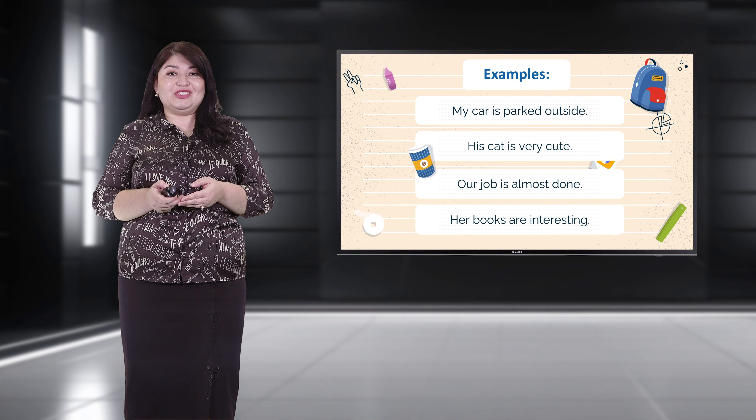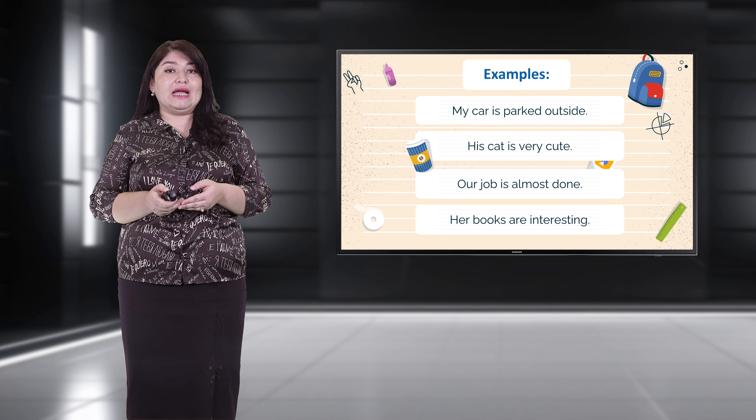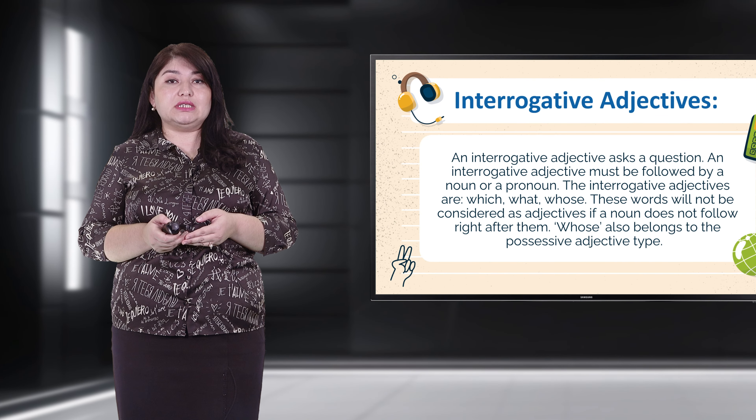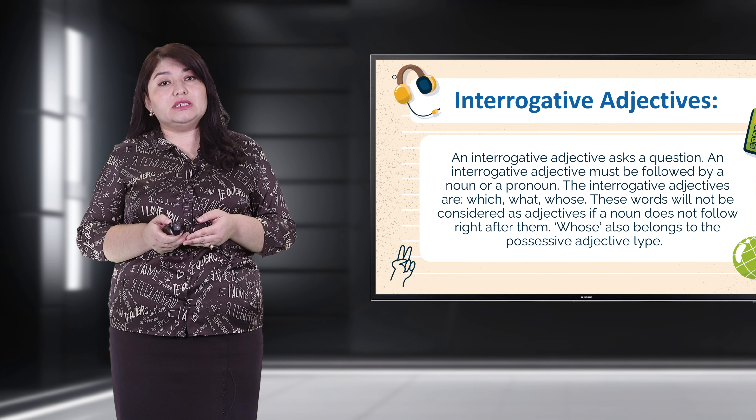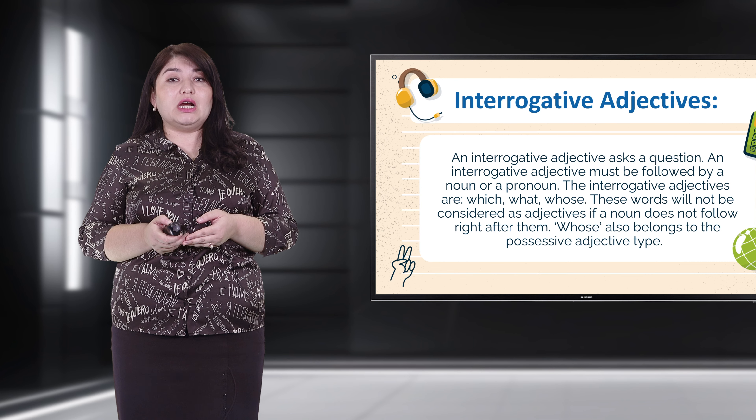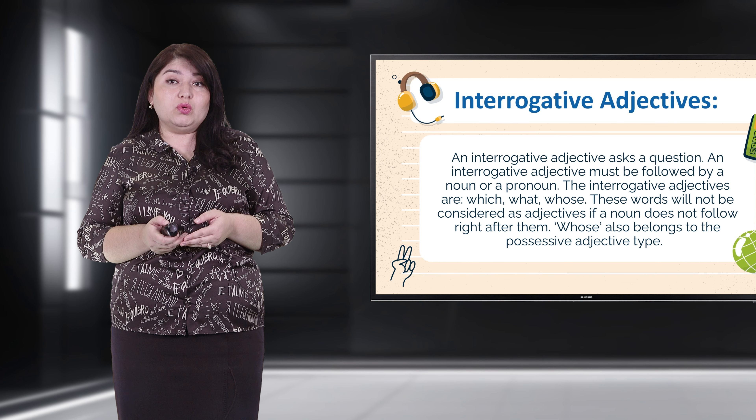Interrogative adjectives ask a question. An interrogative adjective must be followed by a noun or pronoun. The interrogative adjectives are which, what, and whose. These words will not be considered adjectives if a noun doesn't follow right after them. 'Whose' also belongs to the possessive adjective type. For example: 'Which phone do you use?' 'What game do you want to play?' 'Whose car is this?'